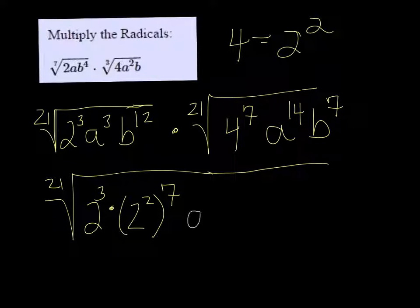And then we get a to the 17th, so we're adding exponents now since we're multiplying the bases. And b to the 19th, 12 plus 7 is 19. 14 plus 3 is 17.